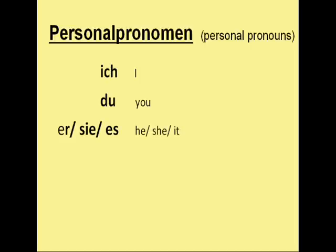Then there is the third person singular. It starts with 'er', which means 'he'. Then 'sie', which means 'she', and 'es', which means 'it'. So I repeat: er, sie, es. And one more time: er, sie, es.